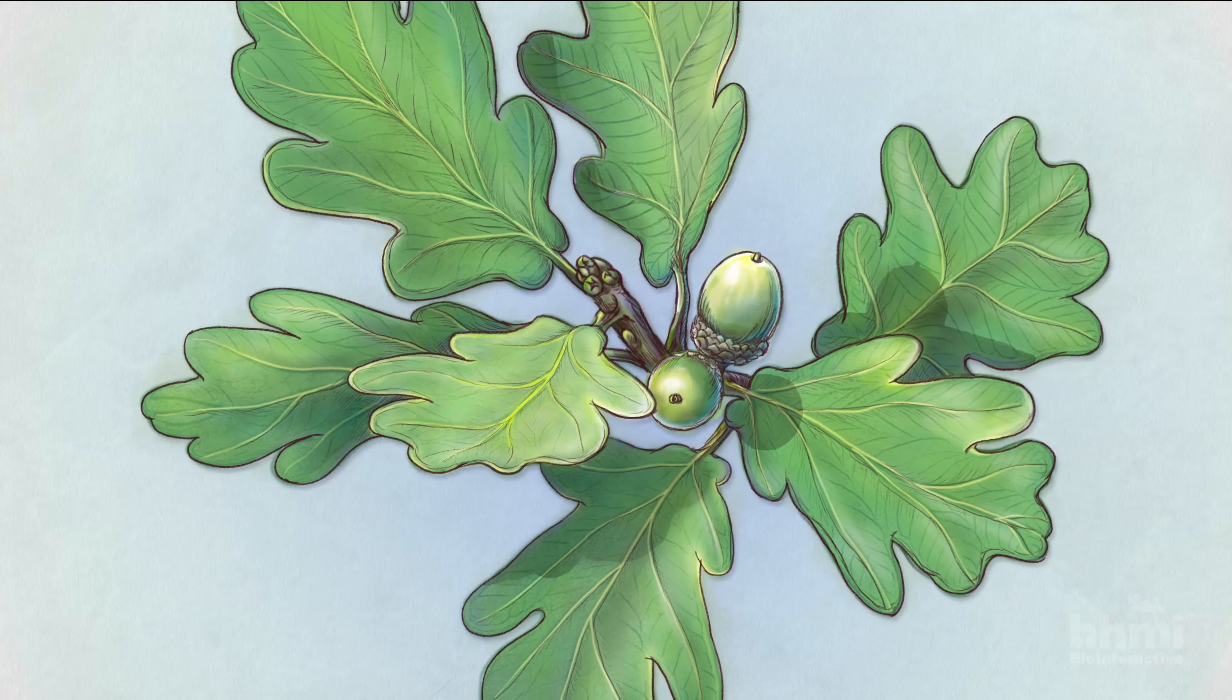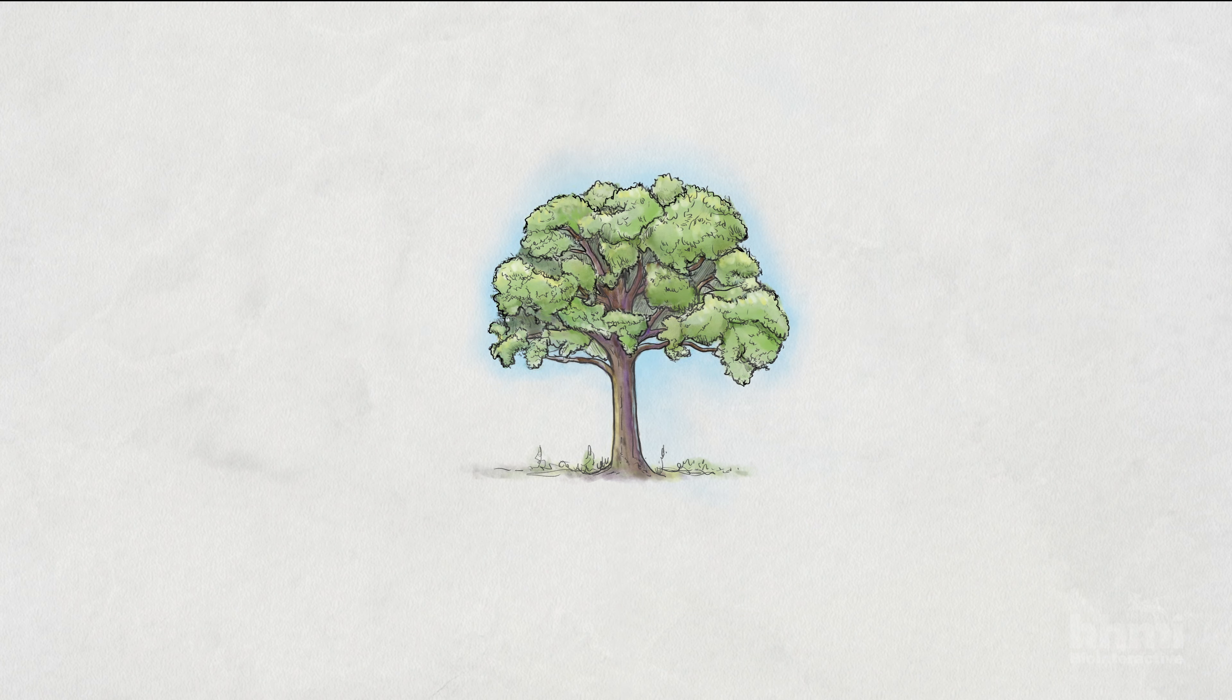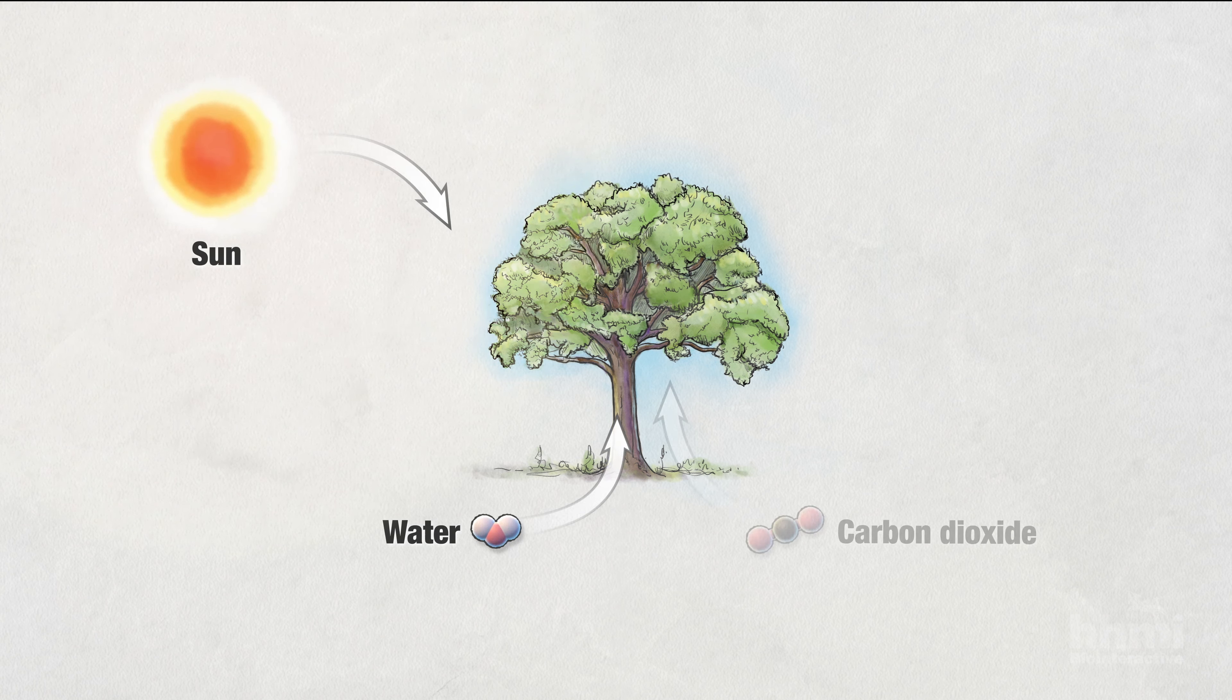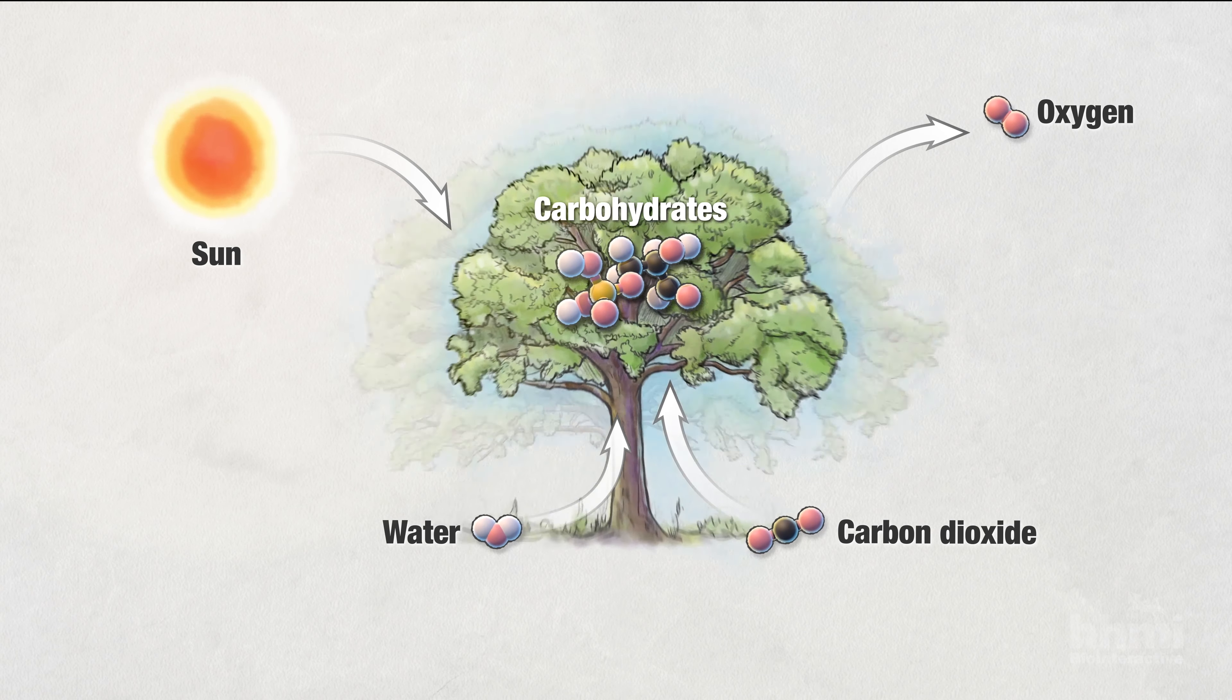Leaf cells can also sometimes form starch for long-term energy storage. Overall, the molecules generated by photosynthesis provide fuel and building materials that allow a plant to grow.